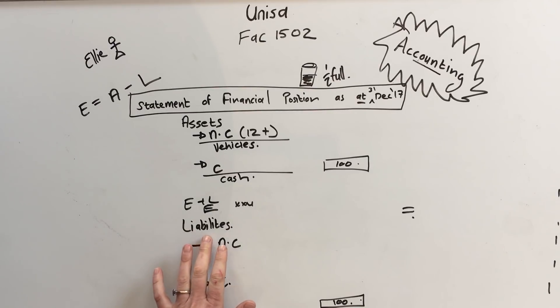On the liability side we have the loan that we're using to pay the vehicle. We are paying it off for longer than 12 months so it is non-current and we will call this a long-term borrowing.